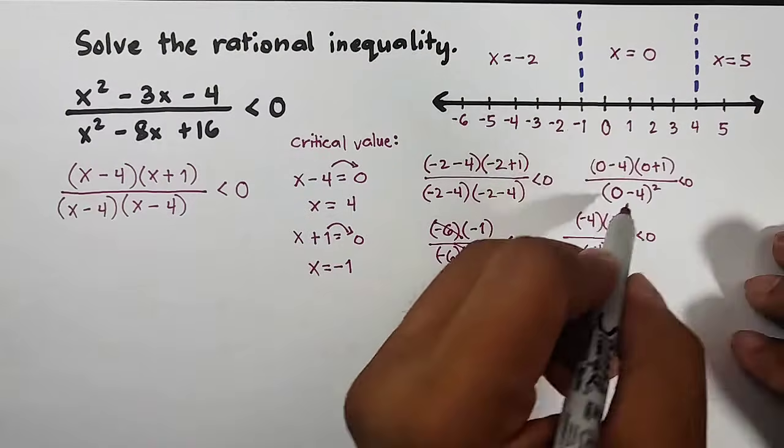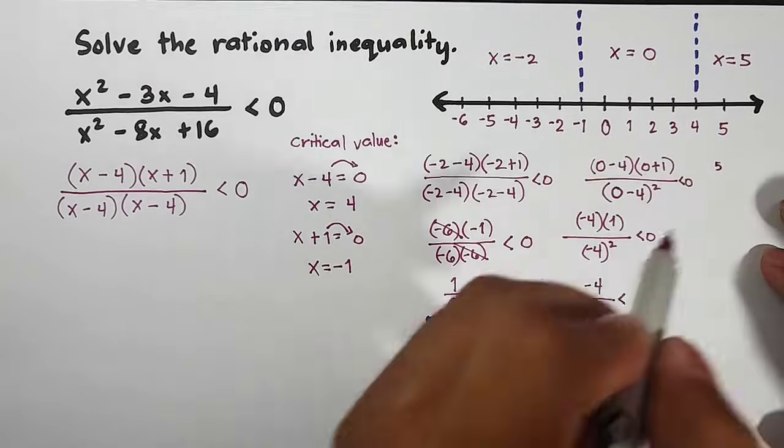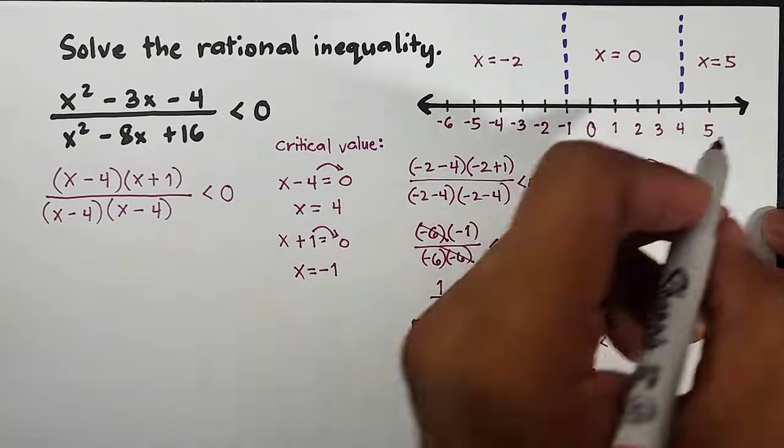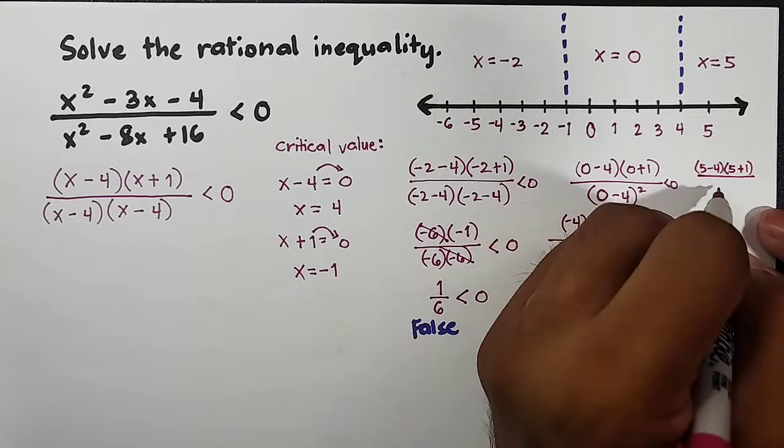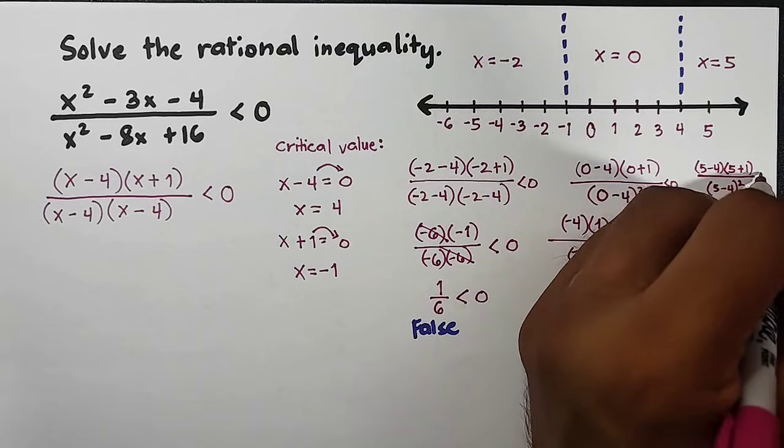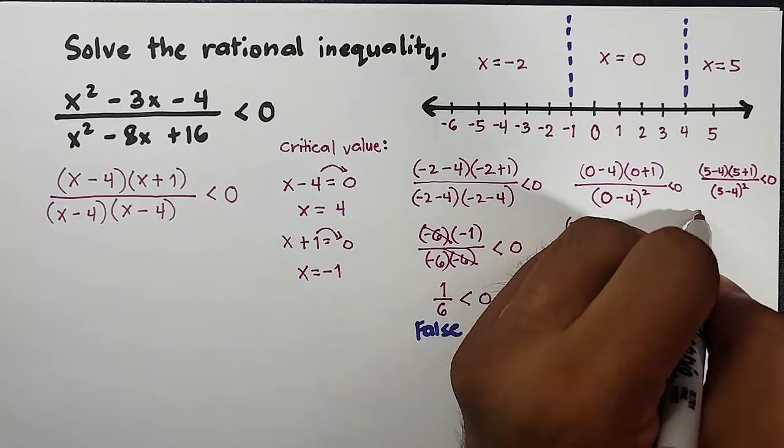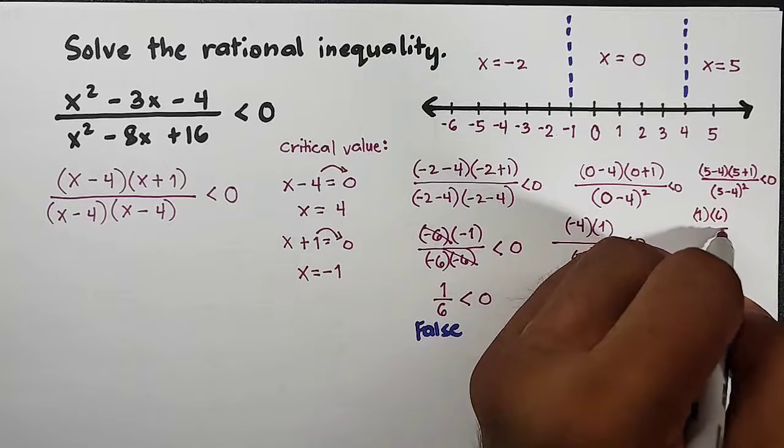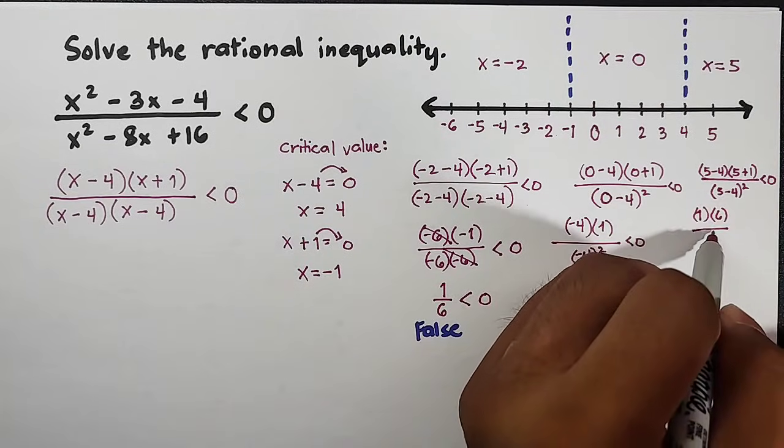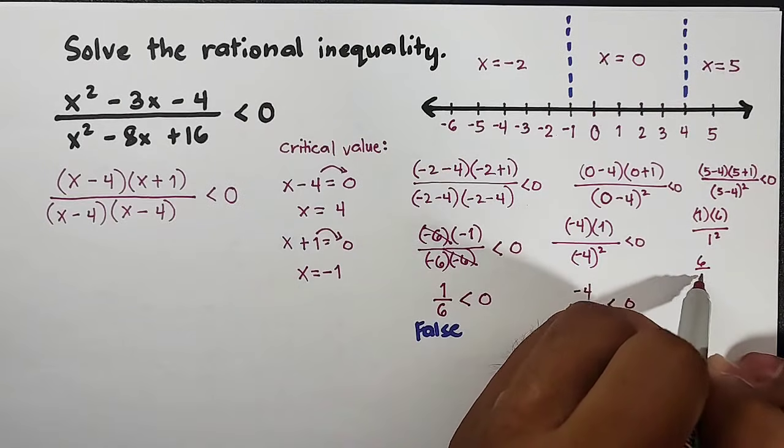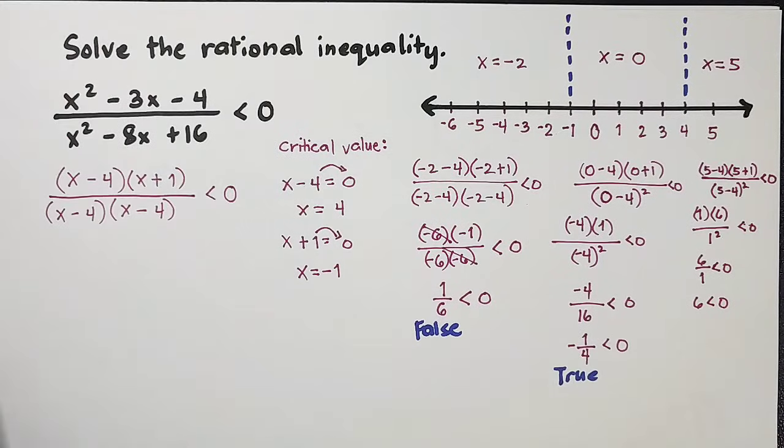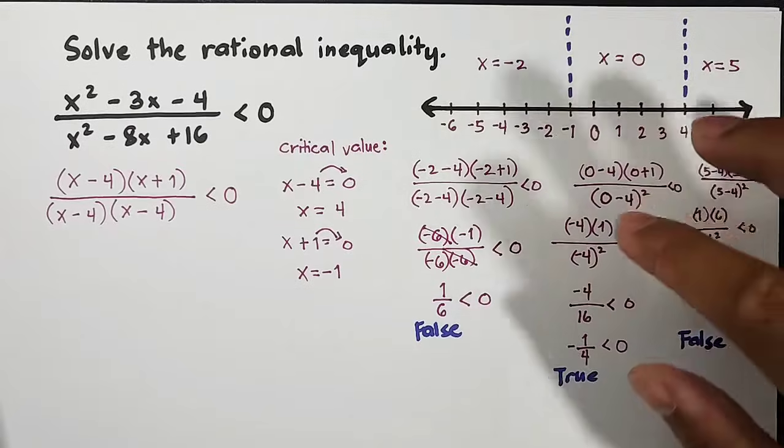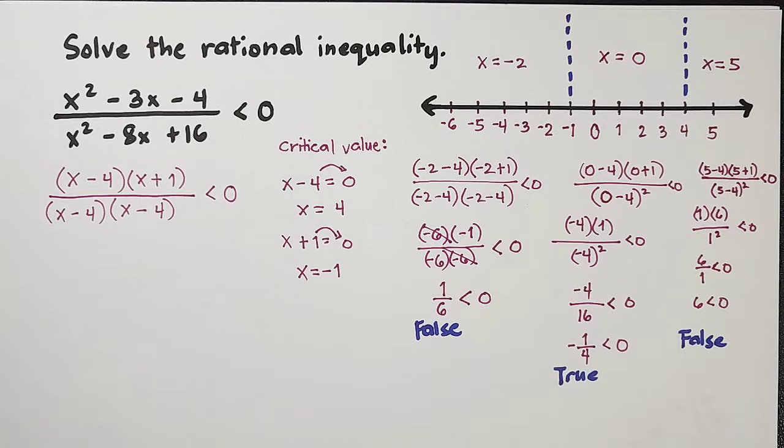On the right side, using x = 5: (5 - 4)(5 + 1)/(5 - 4)² < 0. Simplifying: (1)(6)/1² = 6/1 = 6. So 6 < 0. Is 6 < 0? As you can see, this is a false statement. So now we identified that the middle region contains the possible values of x.